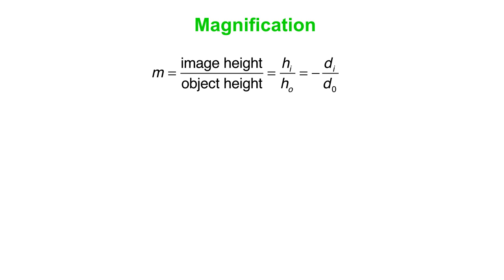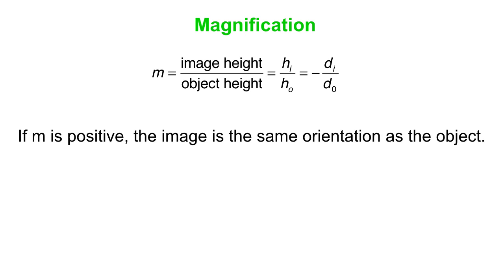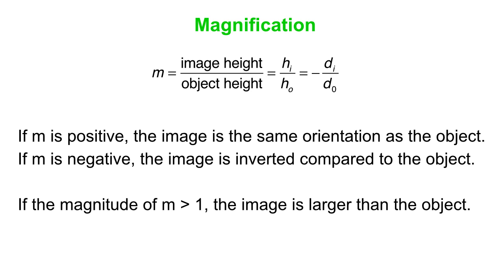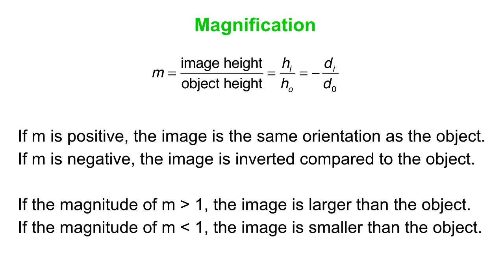Our magnification equation is exactly the same as it was for lenses. Image height over object height minus di over do. If m is positive, the image is the same orientation as the object. If it's negative, it's inverted. And if the magnitude of m is bigger than 1, the image is larger than the object. If it's less than 1, the image is smaller than the object.